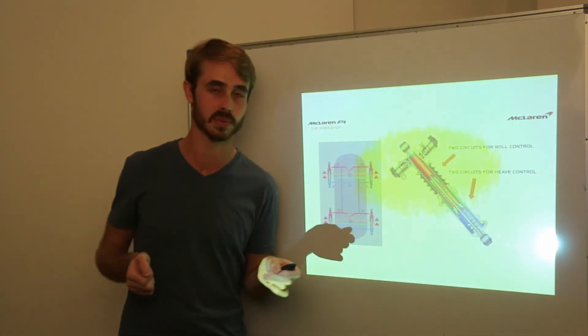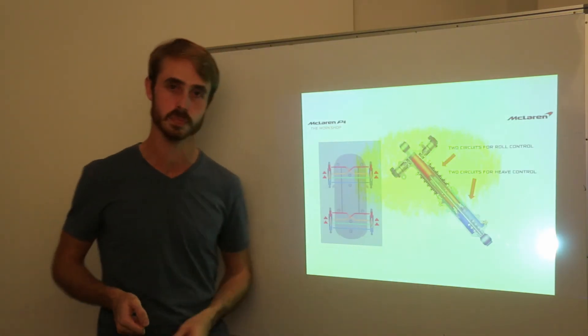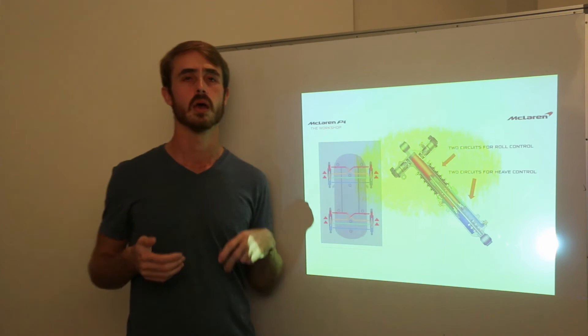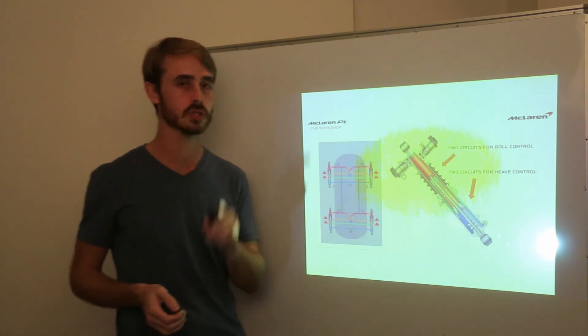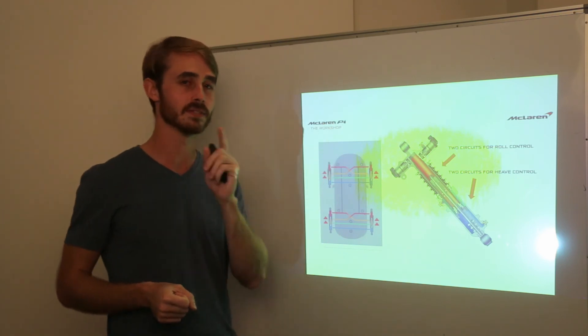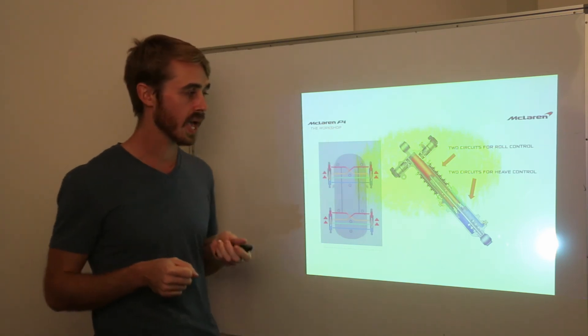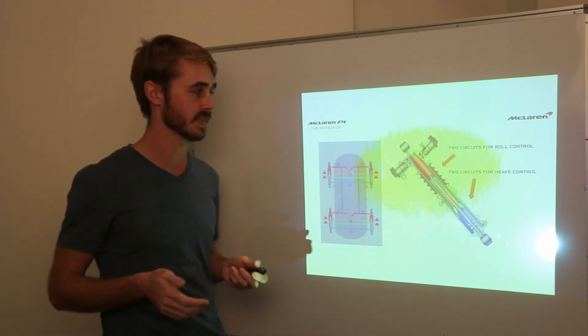Now the final point I want to go through with the active aerodynamics is actually the suspension. You may be asking, well we're talking about aerodynamics here, why are we looking at the suspension? That's because the suspension on the McLaren is very clever. It has no anti-roll bars or anything like that, everything is done by hydraulic circuits across the car.